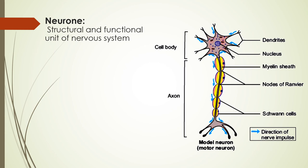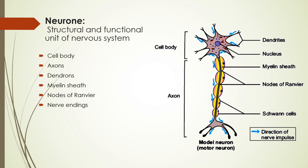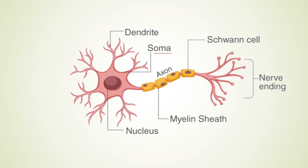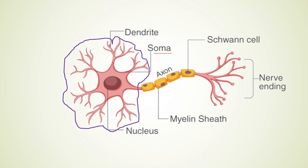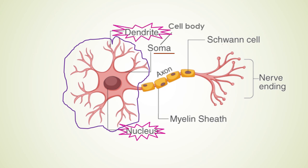A neuron has the following parts: cell body, axons, dendrons, myelin sheath, etc. Neurons never divide, but broken nerve cells can be regenerated by special proteins called nerve growth factor proteins. The main portion of a neuron is the soma, or simply the cell body, which has a nucleus and cytoplasm just like any typical cell. Many cytoplasmic extensions arise from the cell body and these extensions are of two types. Those which carry impulses towards the cell body are known as dendrons or dendrites, while those which carry impulses away from the cell body are known as axons.